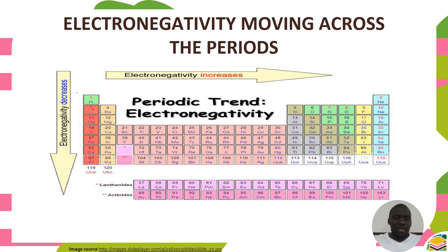This is contrary to moving from top to bottom. Moving from top to bottom, the number of protons and electrons are indeed increasing, but they are also affected by the increasing number of energy levels. This reduces the attraction of the nuclear charge to the outermost energy level, hence electronegativity decreases going from top to bottom.